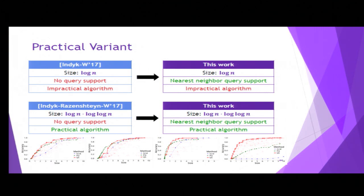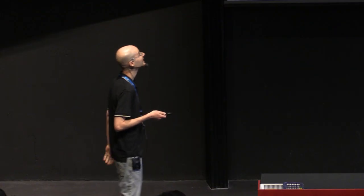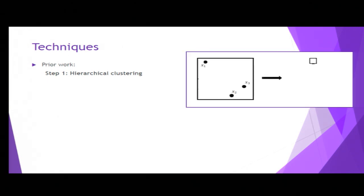This is about the results. In the remaining time, I will tell you briefly about the techniques. Let's start with what prior work was doing and where it was failing. It is based on hierarchical clustering of the metric space, which simply means that you take all your points into one big cluster, and then you refine it, and then you refine it more, until each point is its own cluster. What this gives you is a sequence of gradually refining clusterings of your metric space in different scales of distances.